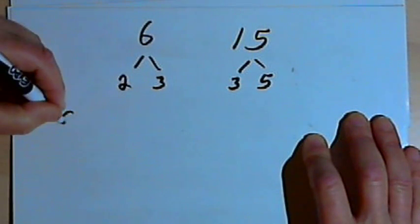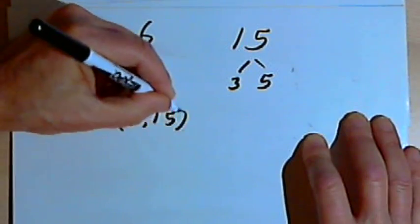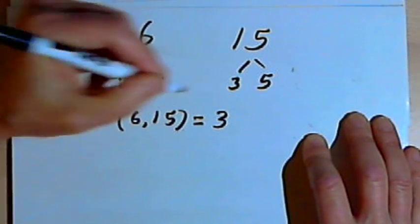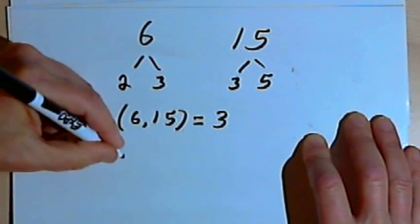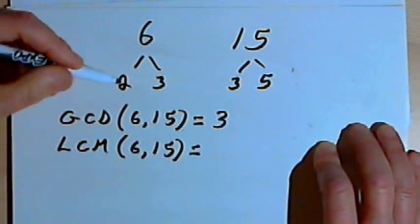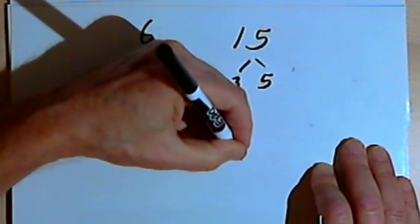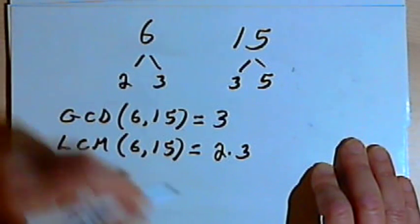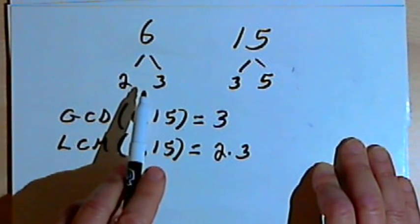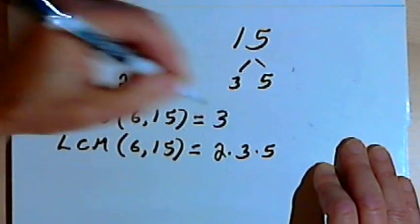The greatest common divisor, or greatest common factor, of 6 and 15 — the only number they have in common is 3. And the least common multiple of 6 and 15, I would find that by taking all of the factors of one of the numbers. Taking all the factors of 6, I've got a 2 and a 3, so I'll write 2 times 3. Then I'm also going to multiply by any factor of 15 which is not a factor of 6. Well, 5 is a factor of 15 but not a factor of 6, so I'll have 2 times 3 times 5.